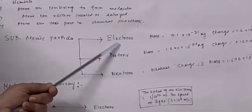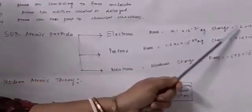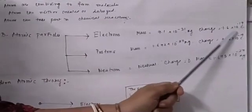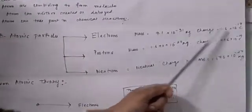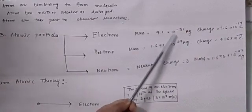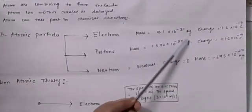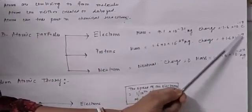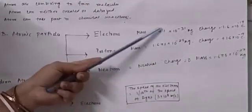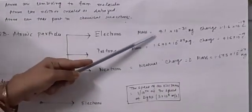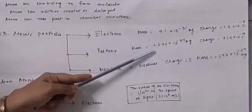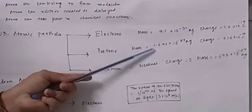Electrons are negatively charged particles whose charge is minus 1.6 into 10 to the power minus 19 coulombs and whose mass is 9.1 into 10 to the power minus 31 kg. Next is proton. Protons are positively charged particles whose charge is plus 1.6 into 10 to the power minus 19 coulombs and mass is 1.672 into 10 to the power minus 27 kg. You can see that the mass of the electron is very much less than the mass of protons, so protons have higher mass than electrons.